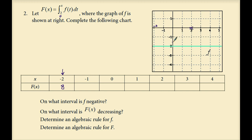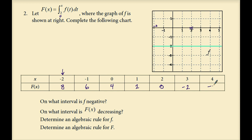Going back to negative 1 gives area negative 6, but moving backwards means the function value is positive 6. F of 0 is the area from 2 to 0, a rectangle with area negative 4; moving backwards gives function value positive 4. From 2 to 1, area negative 2, function value positive 2. From 2 to 2, no area accumulated, so the function value is 0. From 2 to 3, moving forward, area is negative 2, so the function value is negative 2. From 2 to 4, area negative 4, function value negative 4.